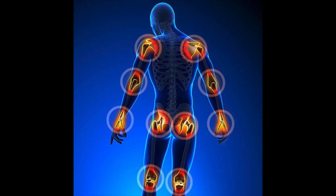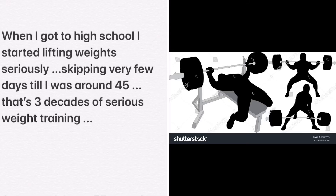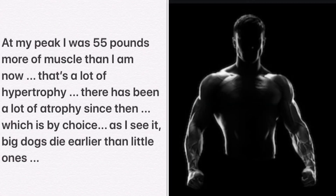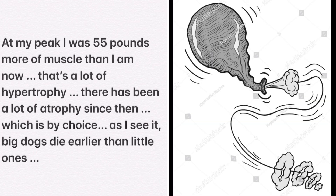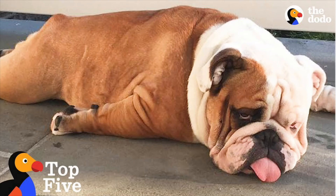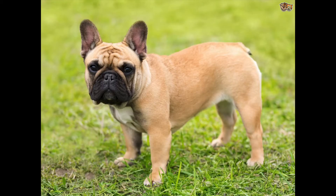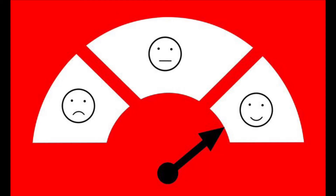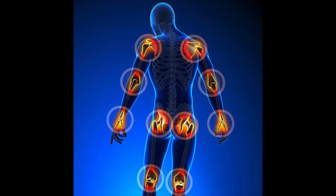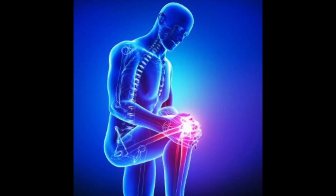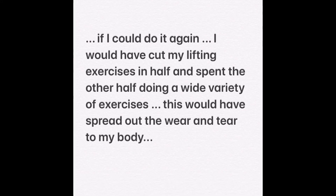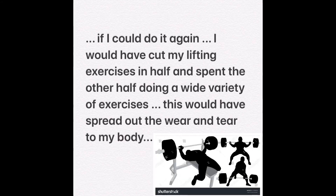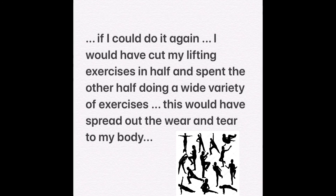I have some personal examples of this. When I got to high school, I started lifting weights seriously, skipping very few days until I was around 45 years of age — that's three decades of serious weight training. At my peak, I was 55 pounds more muscle than I am now. That's a lot of hypertrophy, and there's been a lot of atrophy since then, which is by choice. As I see it, big dogs die earlier than little ones, so I made a choice to downsize myself. I even had to stop exercising for a few years so that my body could recover. I now stay lean because it's less weight on my body and less stress on my old worn-out joints. So instead of you going through unnecessary joint issues in your future, I would rather have you understand the value of balance in your workouts now. If I could do it again, I would have cut my lifting exercises in half and spent the other half doing a wide variety of exercises to spread out the wear and tear on my body.